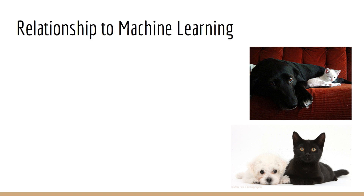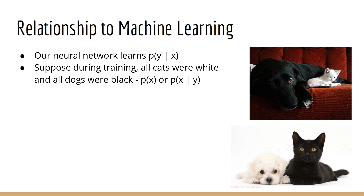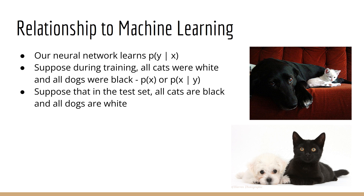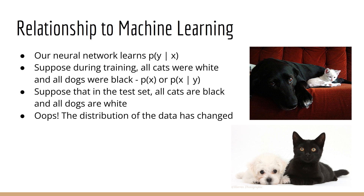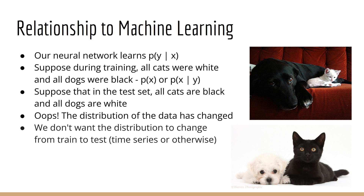The concept of stationarity also applies outside of time series, though we don't typically call it that. Consider that your data comes from some distribution — a neural network learns p(y|x), the probability for target y given input x. For example, suppose we're building a classifier to tell apart cats and dogs, where all the cats are white and all the dogs are black. If the test set is reversed — all dogs are white and all cats are black — our model probably won't do very well, because the distribution of the data has changed. In terms of time series, you do not want the distribution of your data to change from train to test; your model simply hasn't learned what to do in those different scenarios.